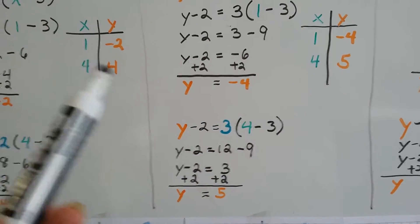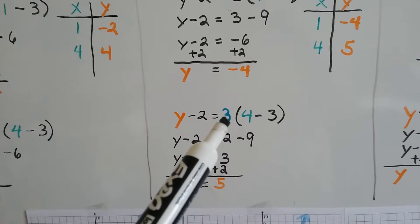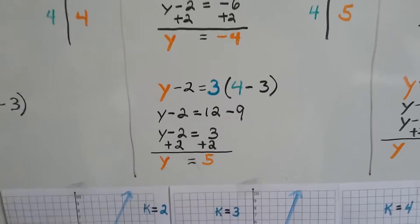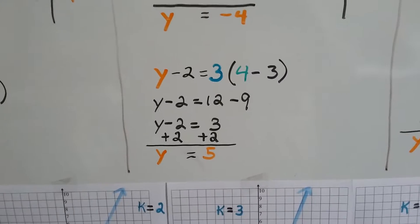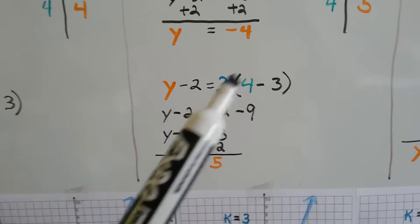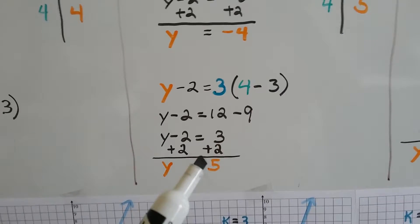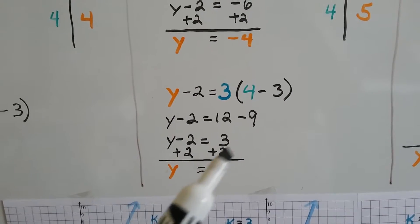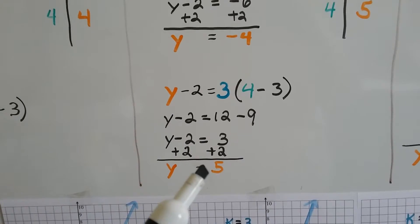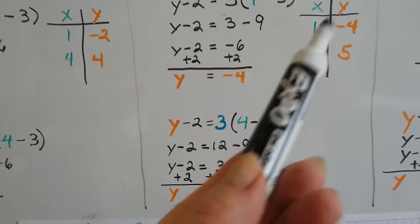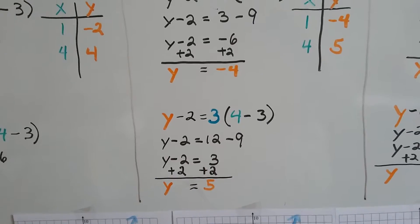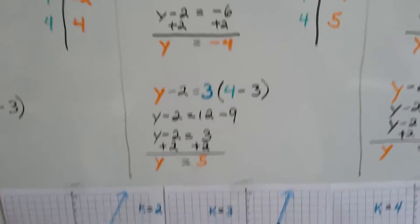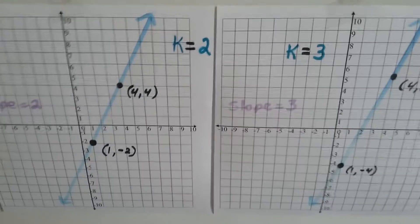We're going to set x to equal 4, just like we did over here. But now that k is equal to 3, let's see what happens. We get 3 times 4 which is 12, and 3 times negative 3 which is negative 9. 12 take away 9 is 3. We need to isolate this y, so we're going to add the 2 again, and we get y equals 5. So now we have these ordered pairs: the 1 and the negative 4, and the 4 and the 5. And we can graph those.